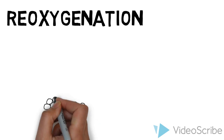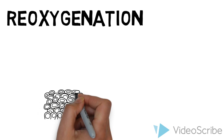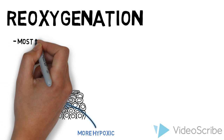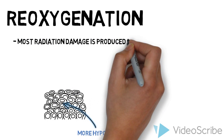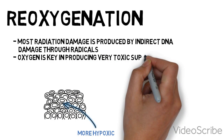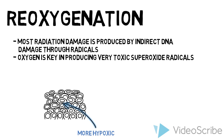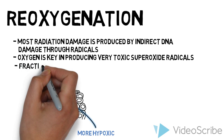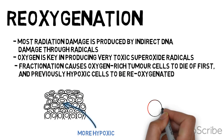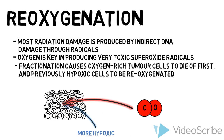Reoxygenation: tumor cells farther away from the blood supply, such as in the center of a tumor, are more hypoxic. Most radiation damage is produced by indirect DNA damage through radicals, and oxygen is key in producing very toxic superoxide radicals. Fractionation causes oxygen-rich tumor cells to die off first, and previously hypoxic tumor cells to be reoxygenated. These cells will thus be more susceptible to radiation in the next fraction.